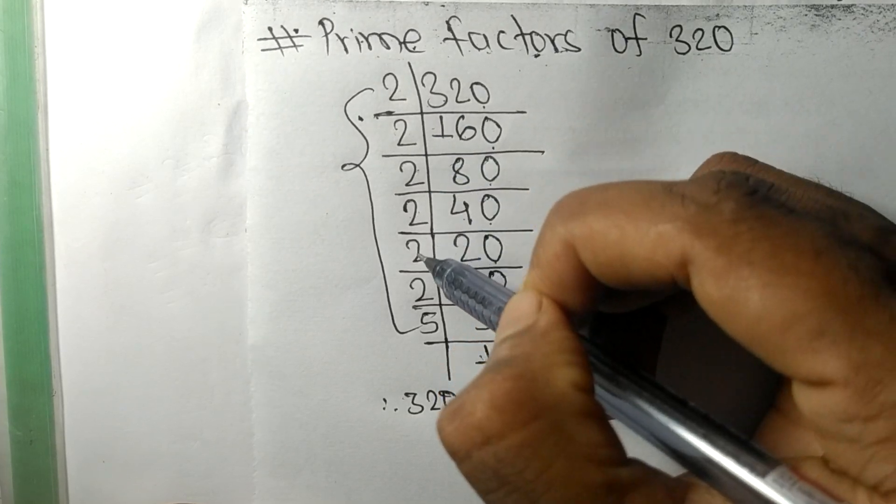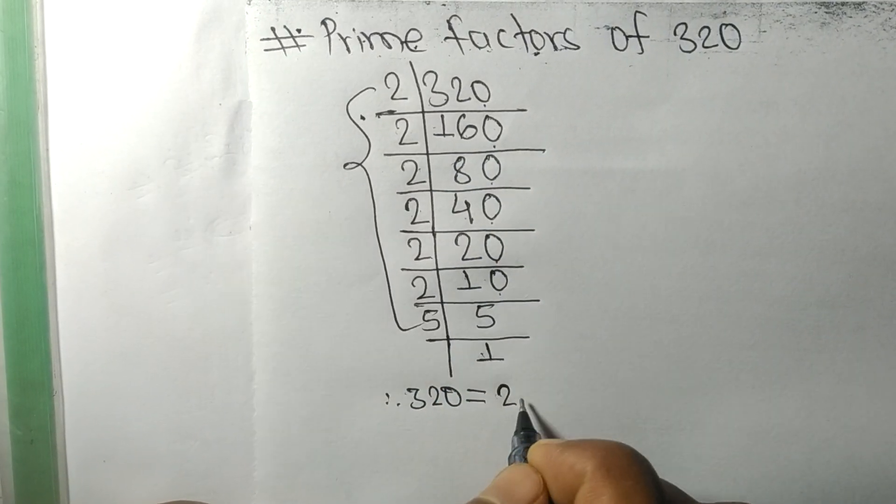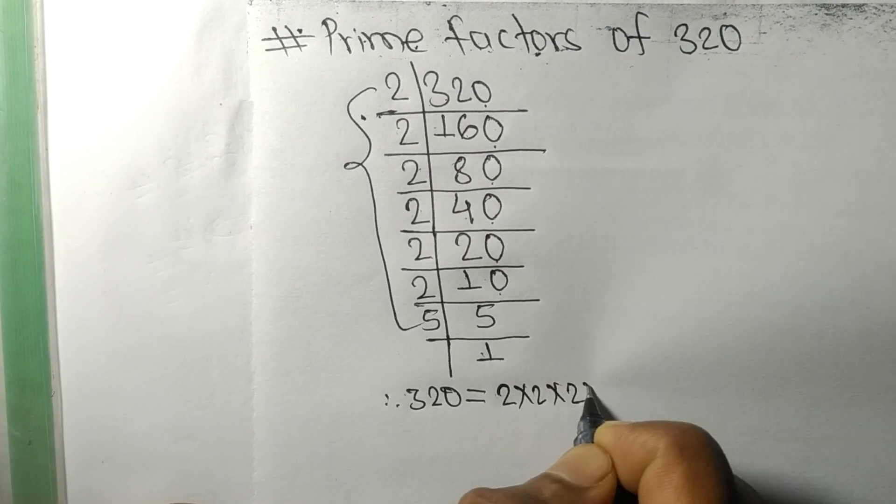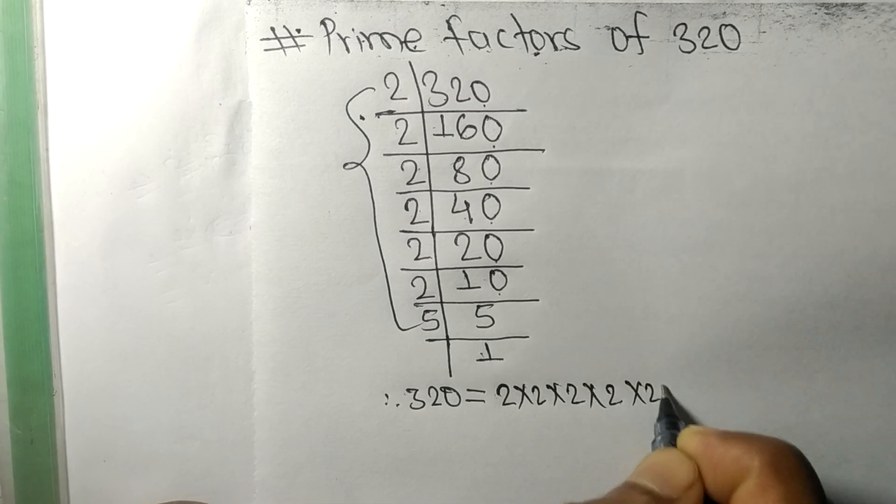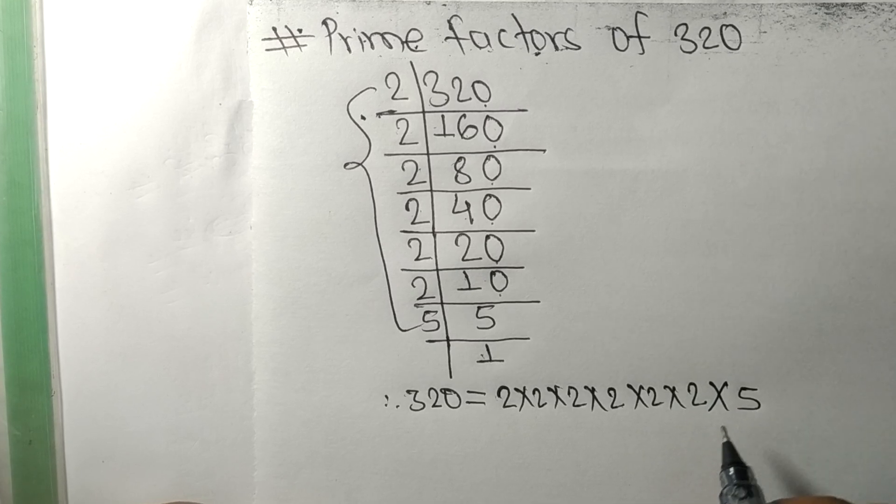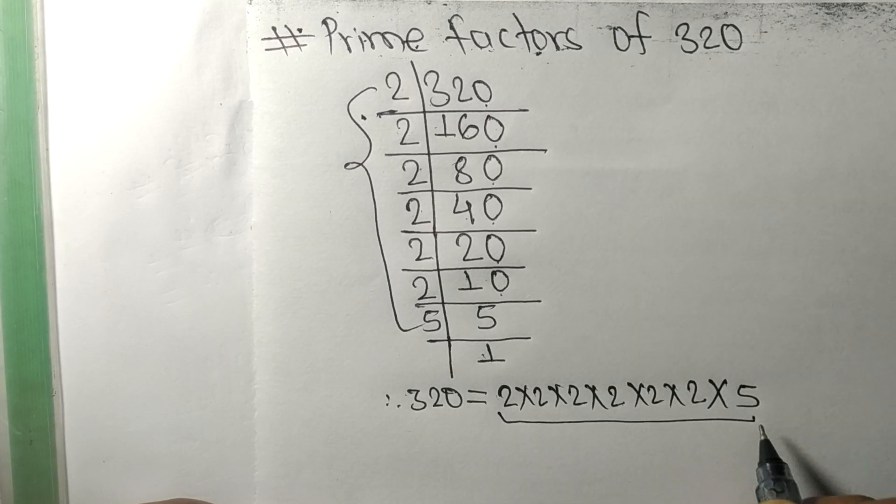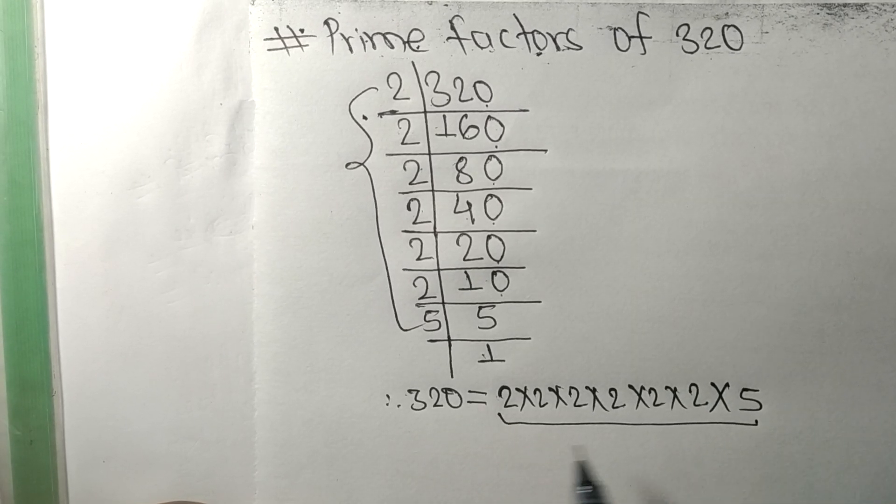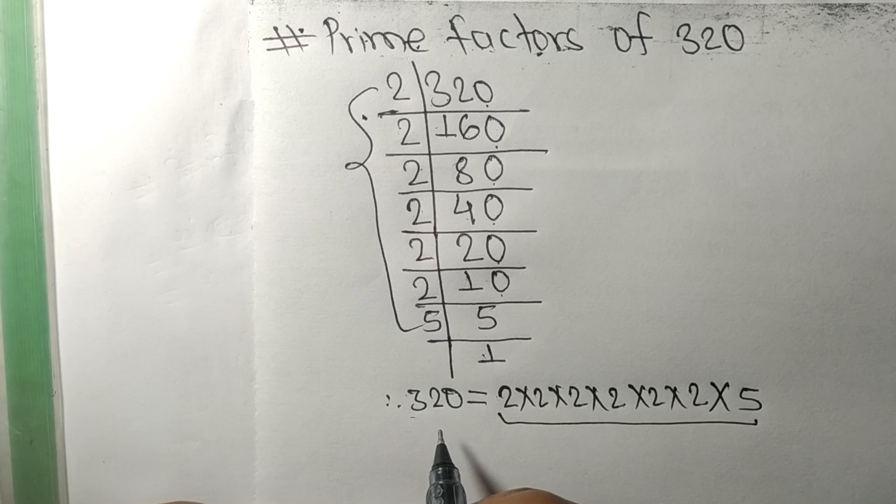Therefore 320 is equal to, from this side, it is 1, 2, 3, 4, 5, 6 times 2. So 6 times 2 and at last 5. So these all numbers are the prime factors of 320.